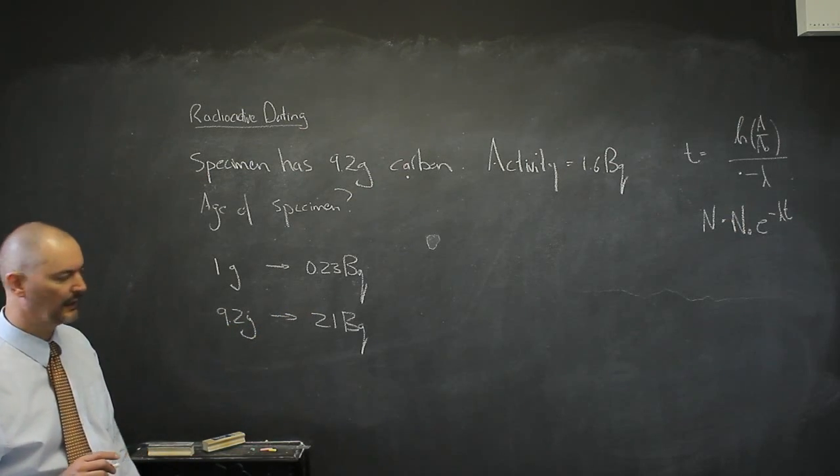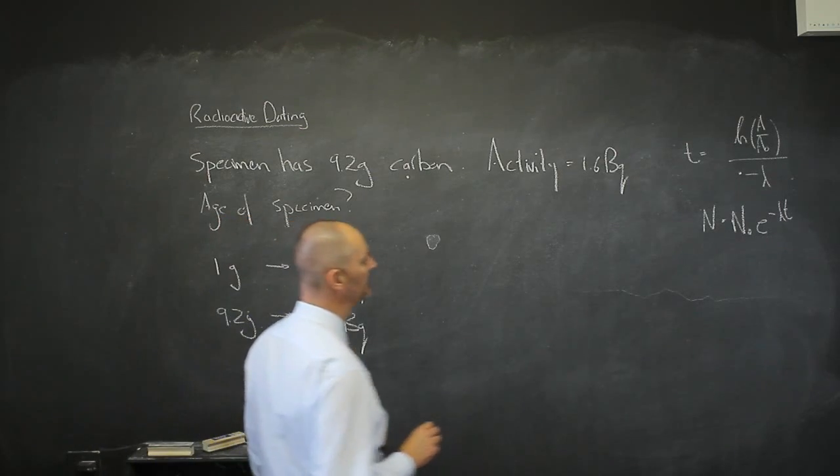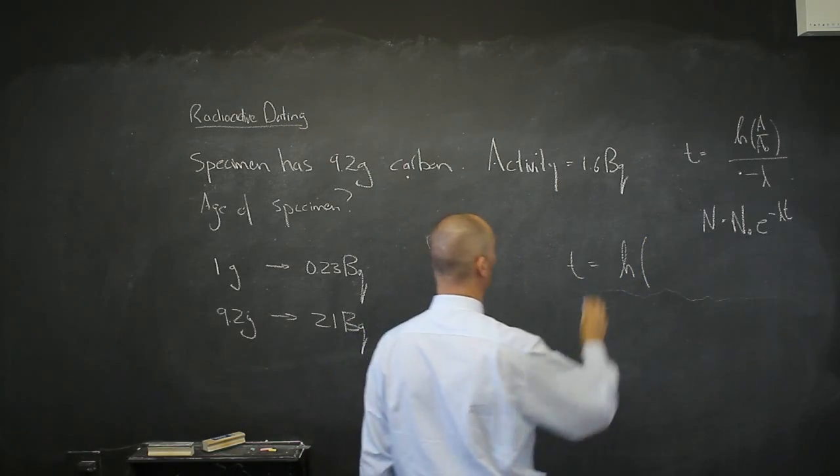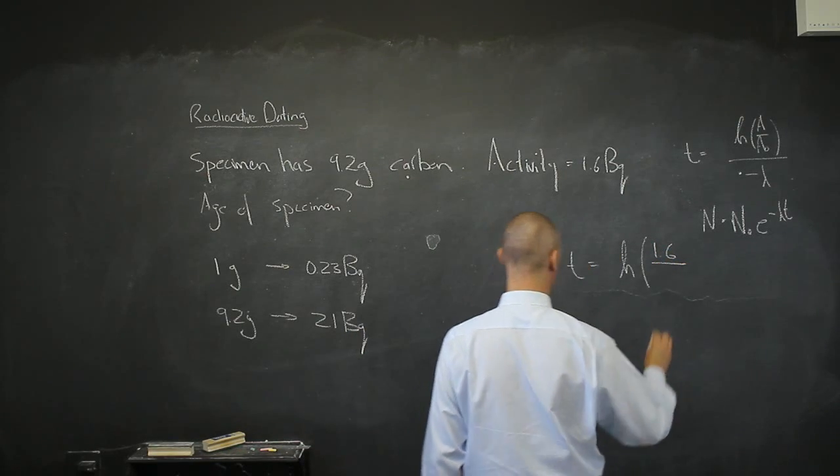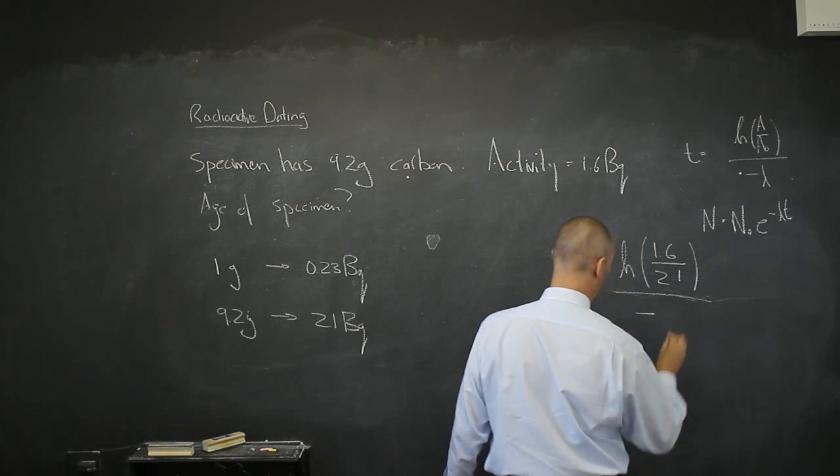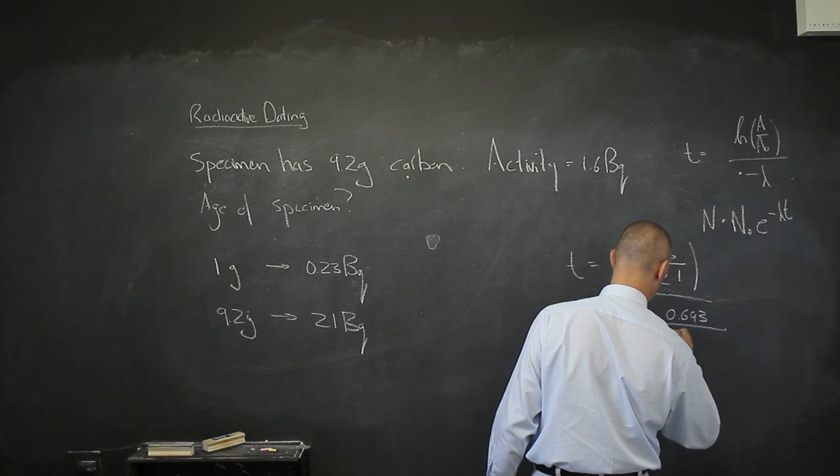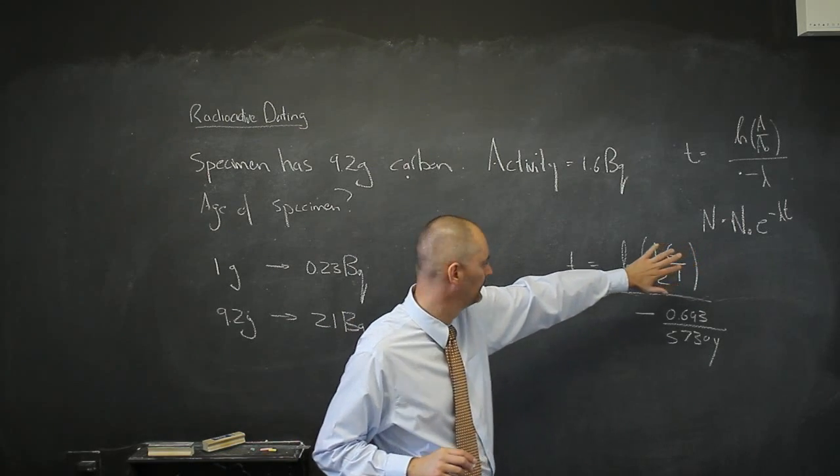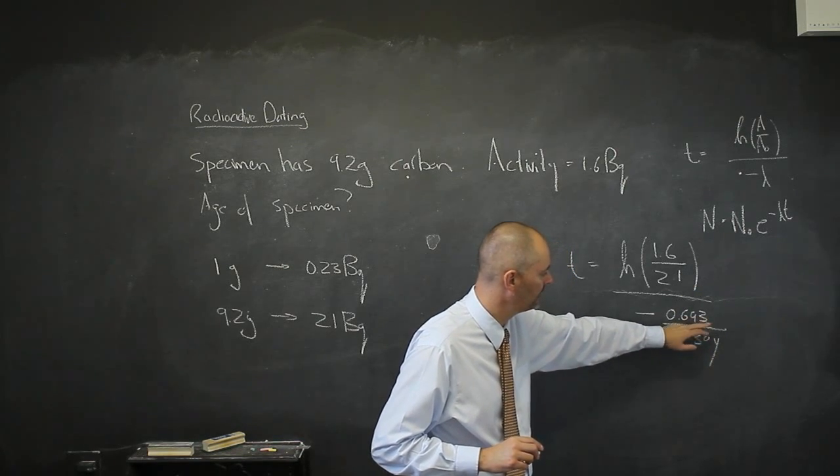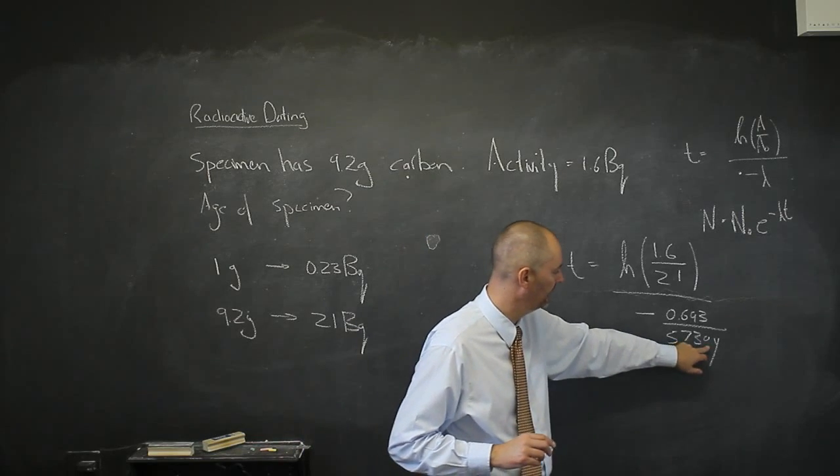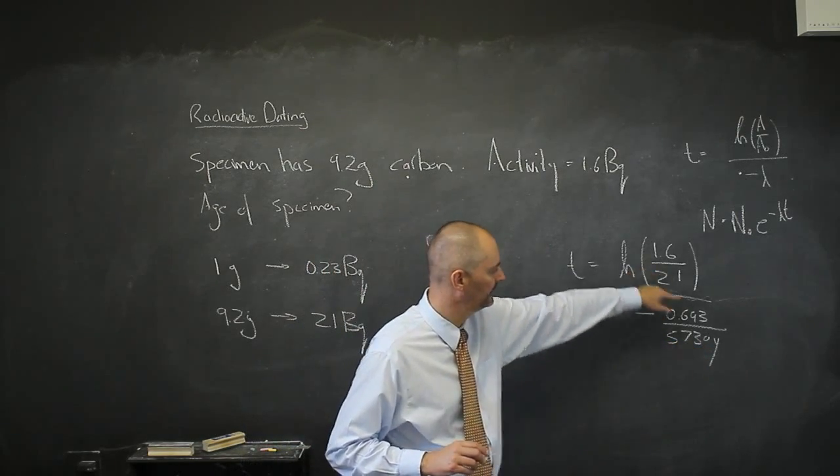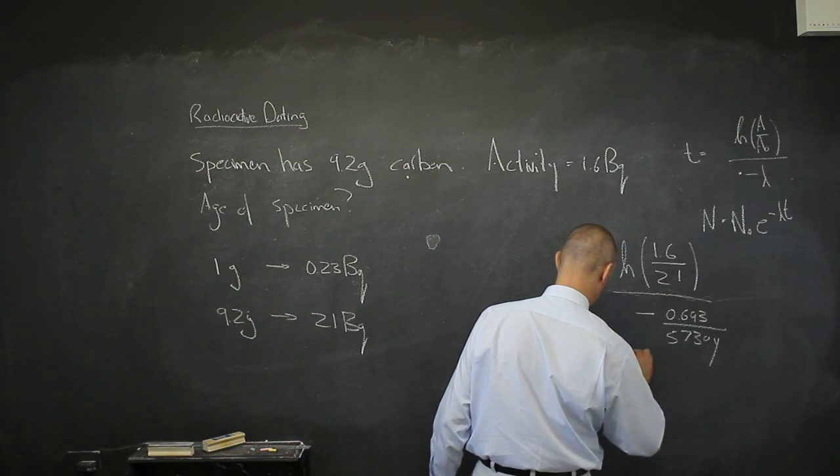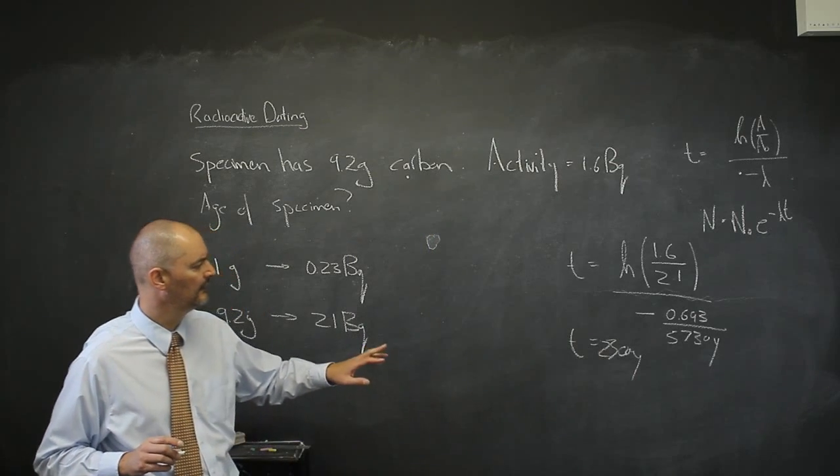For 9.2 grams, we're going to get 2.1 becquerel activity. Now we know that time equals the natural log of A, which is what it is in our specimen, 1.6, divided by what has always been 2.1, times negative 0.693 divided by 5,730 years. Becquerel divided by becquerel cancels. This goes into the numerator as years. This is the natural log of 2. If I plug in years here, I'll get my answer in years since nothing else has units. I don't have to convert to seconds. This gives me about 2,300 years.